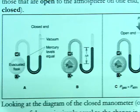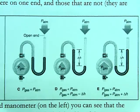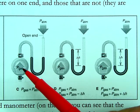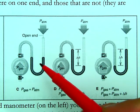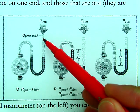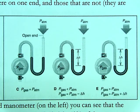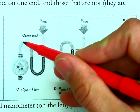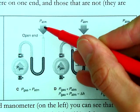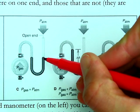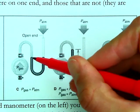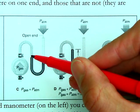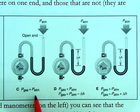Most of the problems we'll do will use open-end manometers. In an open-end manometer, a sample of gas is in one container connected to a glass tube with some mercury, and the other end is open to the atmosphere, so P_atm is the pressure of the atmosphere. If you open the valve and the mercury level is the same on both sides, that means the pressure of the atmosphere pushing down on one side equals the pressure of the gas pushing down on the other — so P_gas equals P_atm.